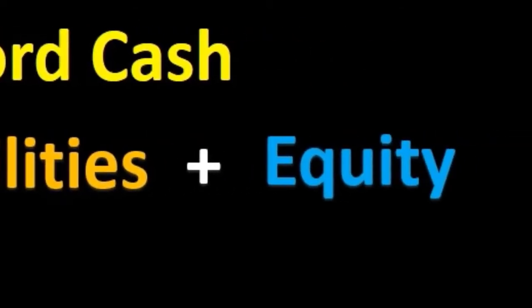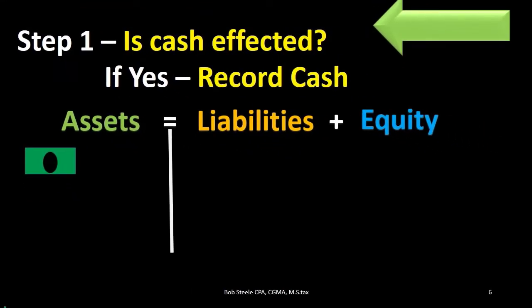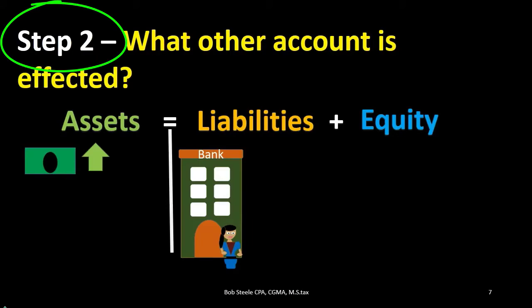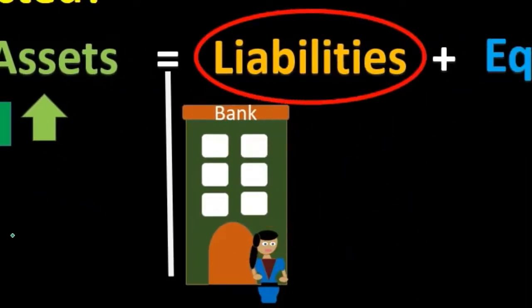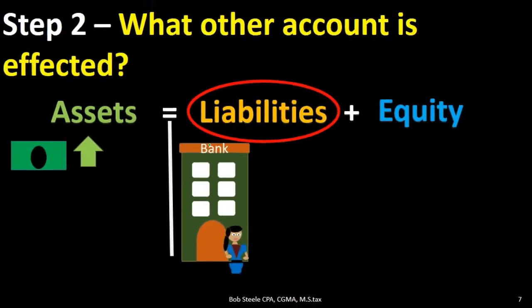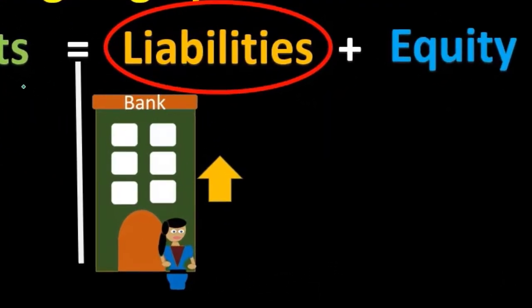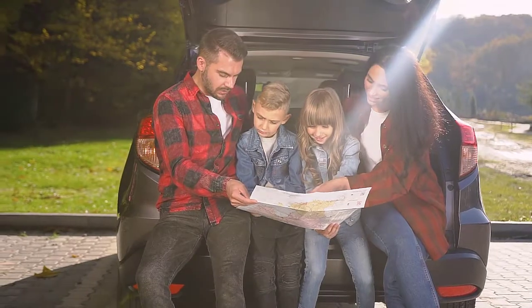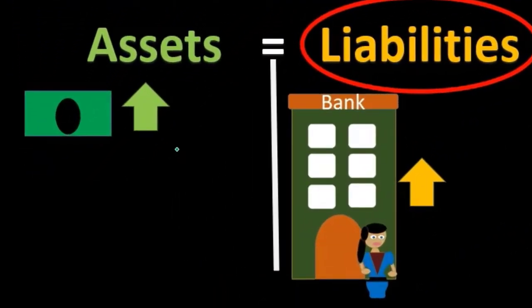Now we will apply this thought process to a few transactions. For the first transaction, step one — is cash affected? Yes, cash is affected, and cash is increasing. Step two — what other account is affected? In this case, we got the cash from a loan that was taken out, so liabilities is the other account affected. If we know liabilities is affected and we know cash went up, then liabilities also needs to go up, because the asset side went up and the equation must remain in balance.